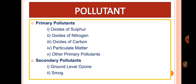Secondary pollutants — examples include ground level ozone and smog. Ground level ozone is a colorless, highly irritating gas.